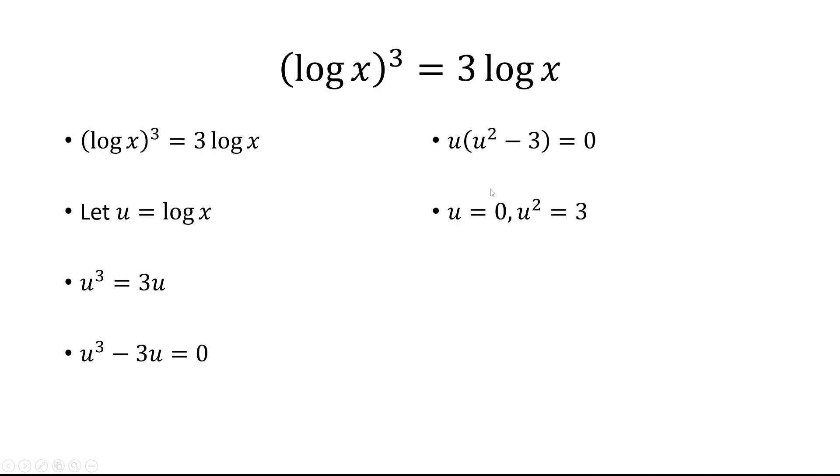And now we have u is 0 or u squared is 3, which gives us plus or minus square root of 3.